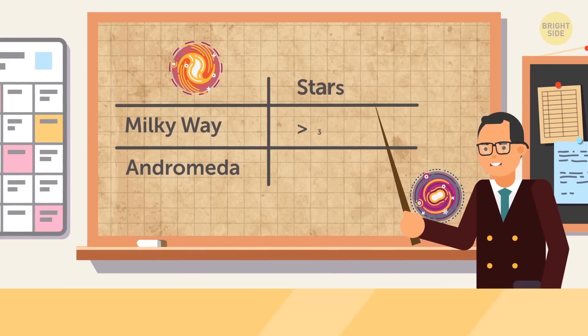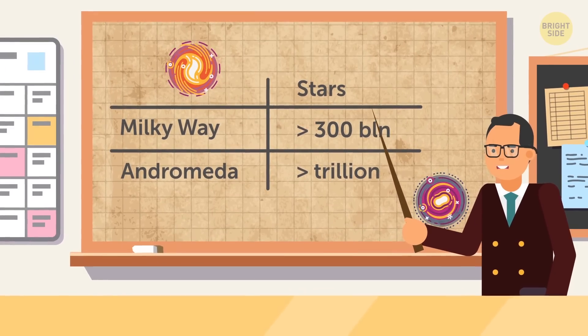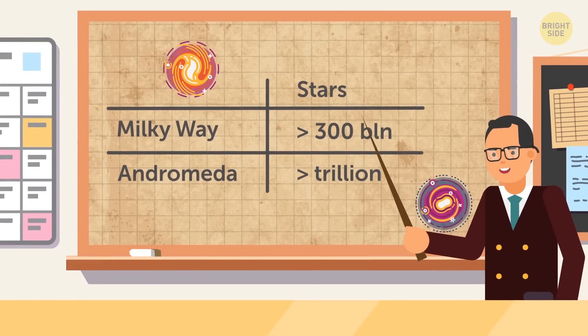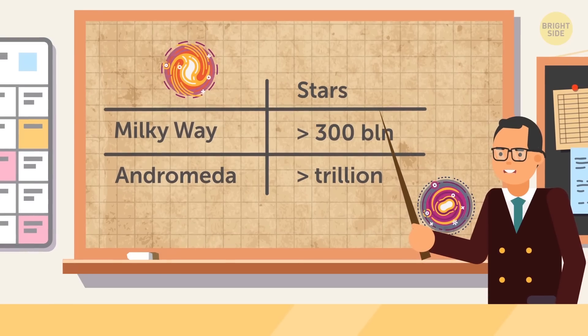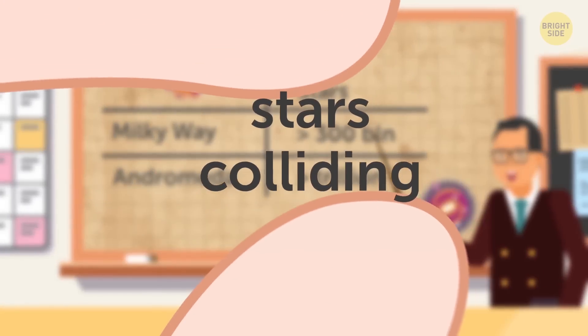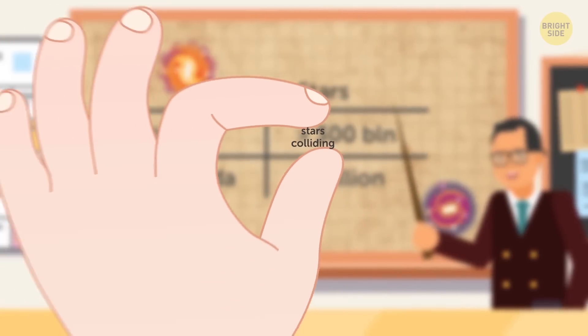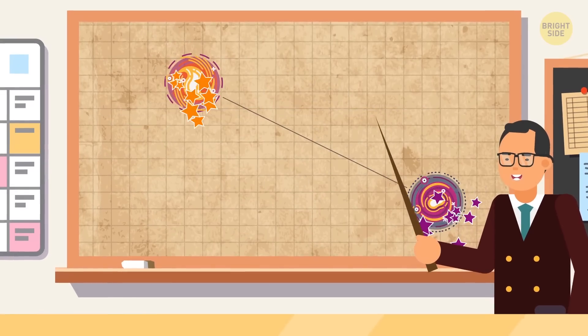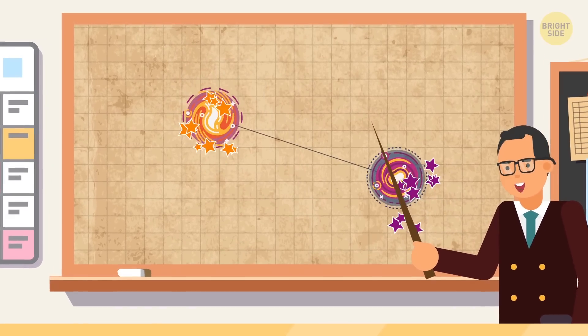Besides, even though the Milky Way is home to more than 300 billion stars, and the Andromeda galaxy contains more than a trillion, the chances of several stars colliding during the galaxy's merge are really low. The reason for that is simple. Stars are located too far away from each other.